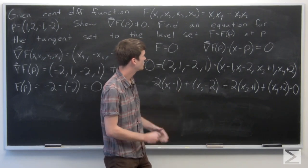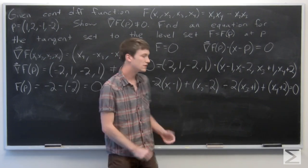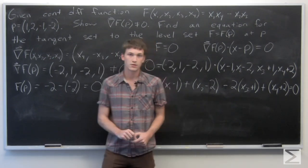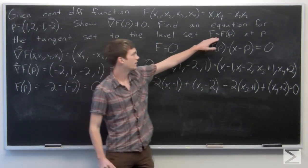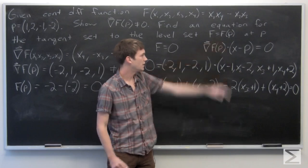So that's our equation for the tangent set to the level set at f of p equals 0 at p.